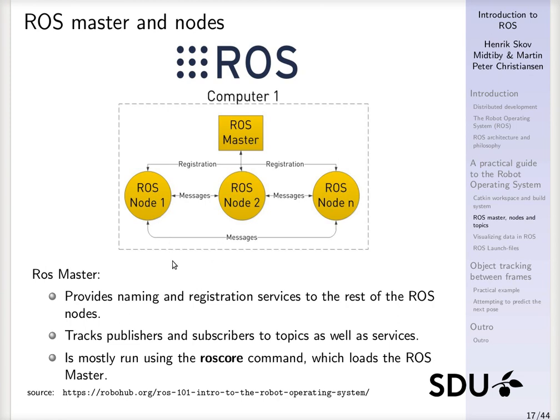The ROS master also keeps track of who sends out information and who should receive information from other nodes. The way messages are sent around is in the form of a publisher-subscriber system, which we'll get into in just a moment. Usually we launch the ROS master using the roscore command.